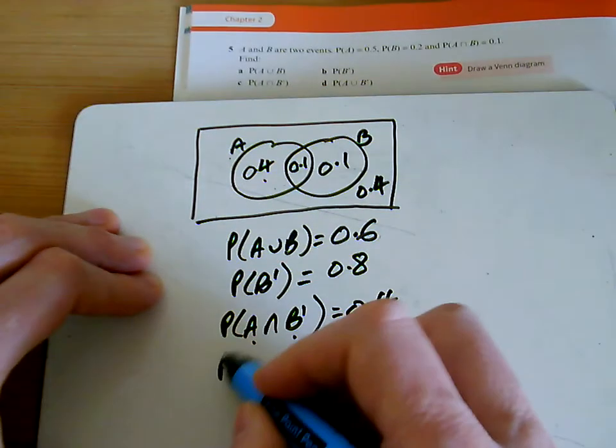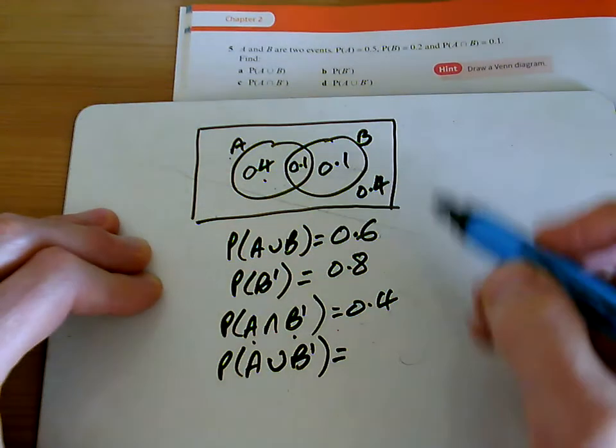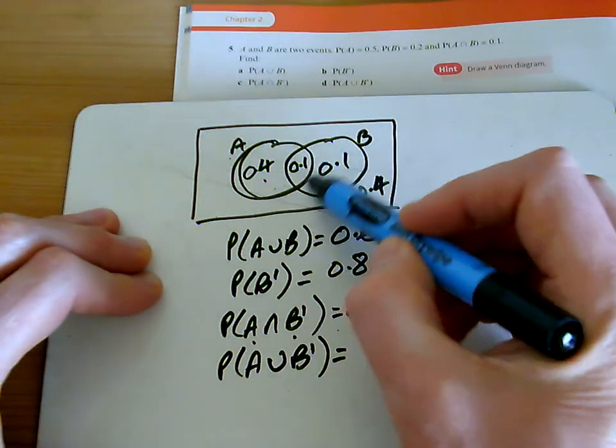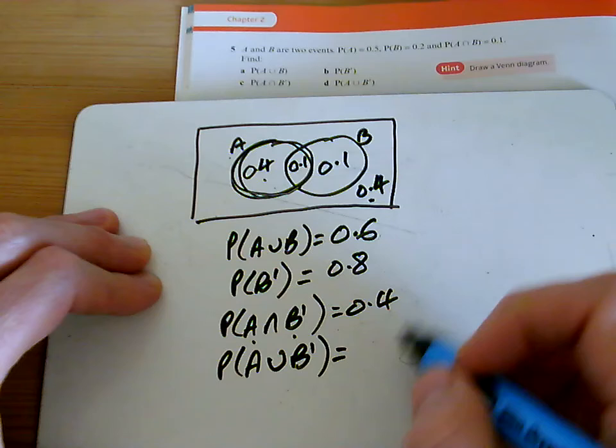And the last one, we're putting together all of A and everything that's not in B. So I want all of A, that's all of that, and everything that's not in B, so that's that one there as well.